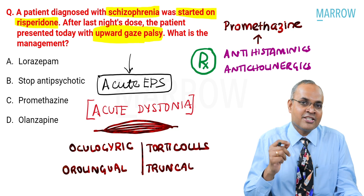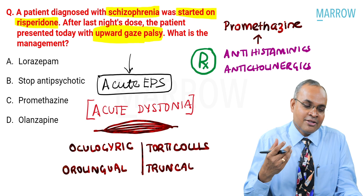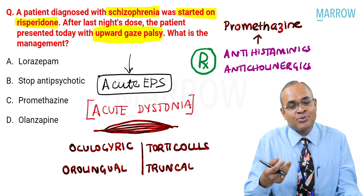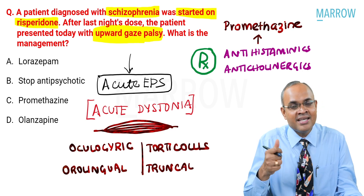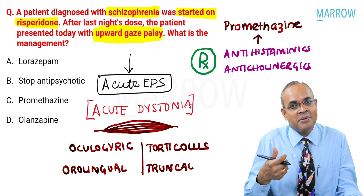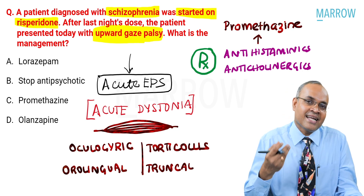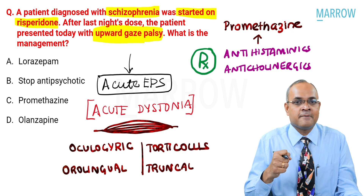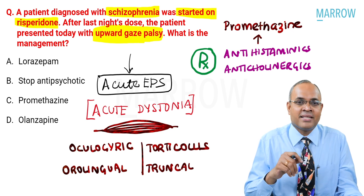That's the advantage of diagnosing the right condition and giving the right treatment. You don't need to be a psychiatrist, but you might encounter such patients in emergencies, casualties, or medical OPDs presenting with acute-onset dystonia, most probably started on an antipsychotic. Diagnose it as acute dystonia and consider giving promethazine. The answer for this question is simply promethazine.